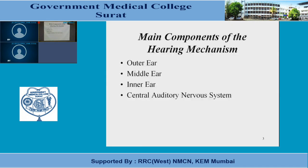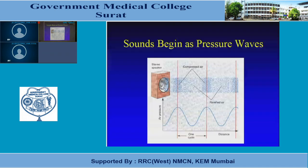The main components of the hearing mechanism: the ear is divided into three parts — outer ear, middle ear, and inner ear. Sound waves from the ear are transmitted through the cochlear nerve to the central nervous system. Sound begins in the form of pressure waves and is transmitted in the form of compression and rarefaction.